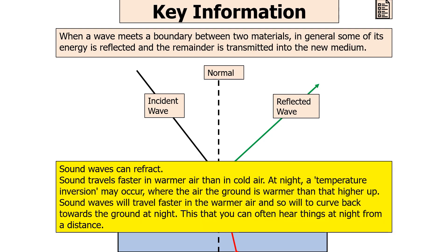Sound waves can also refract. Sound travels faster in warmer air than cold air, so at night a temperature inversion may occur where the air at the ground is warmer than higher up. The sound waves travel faster in the warmer air and curve back down towards the ground — this is why you often hear things from a distance at night.